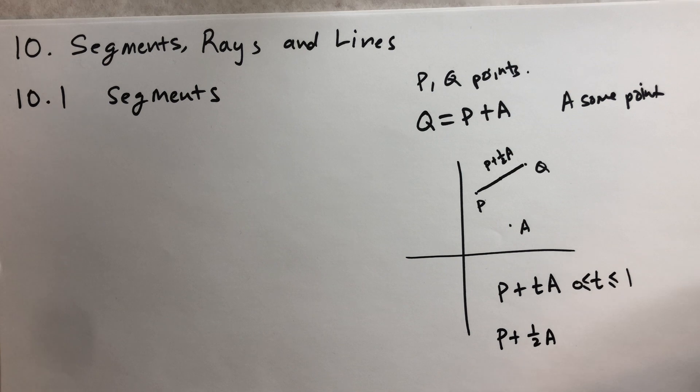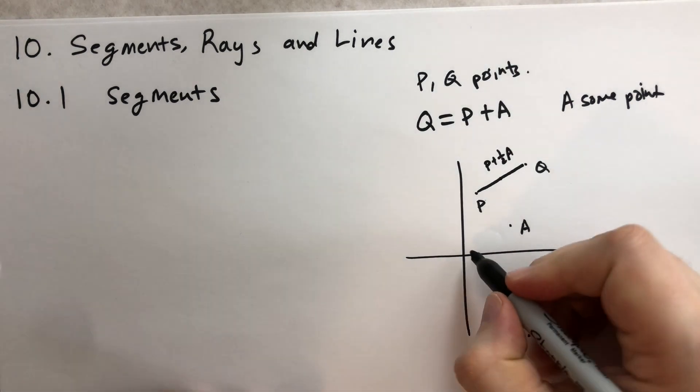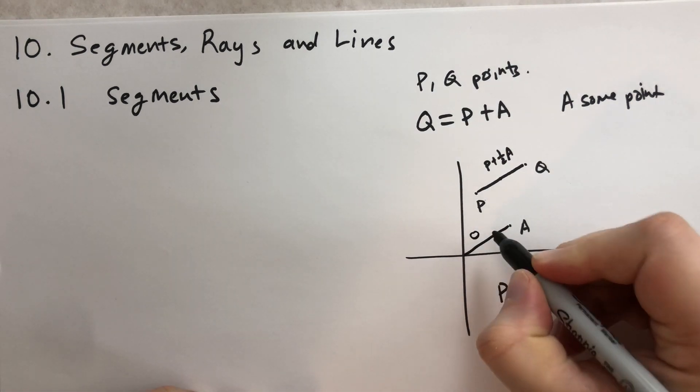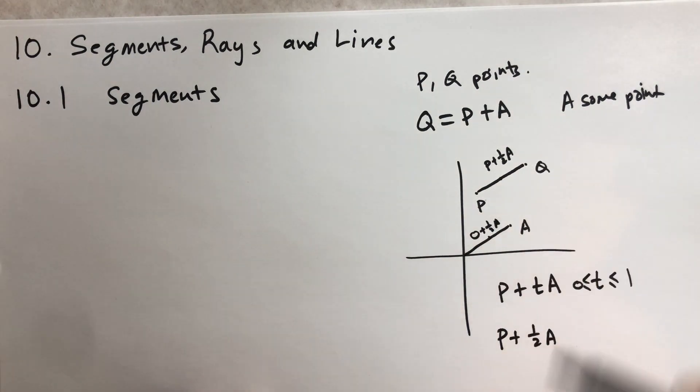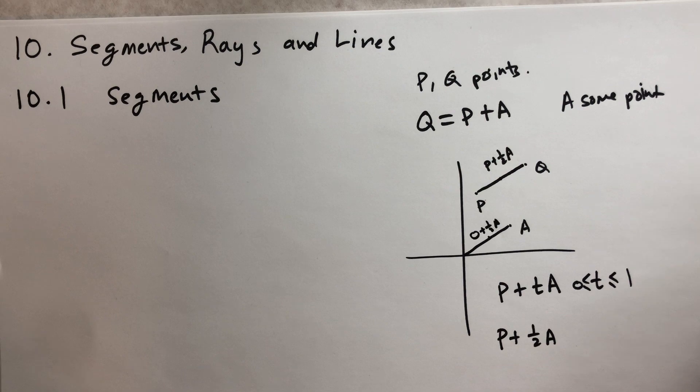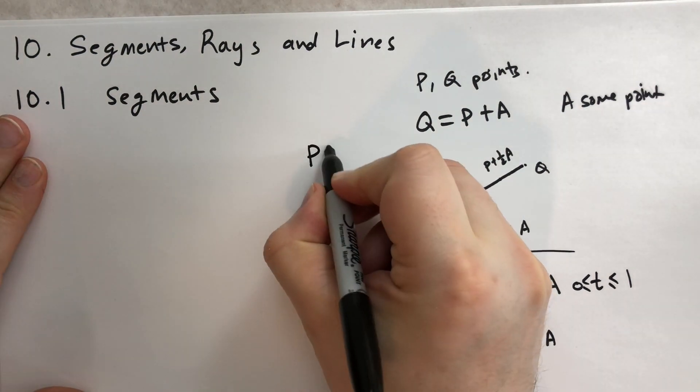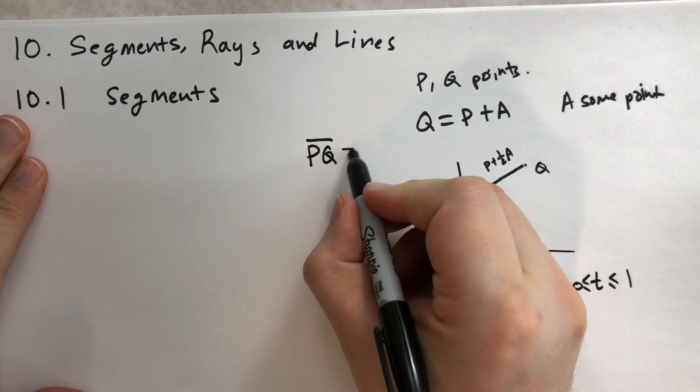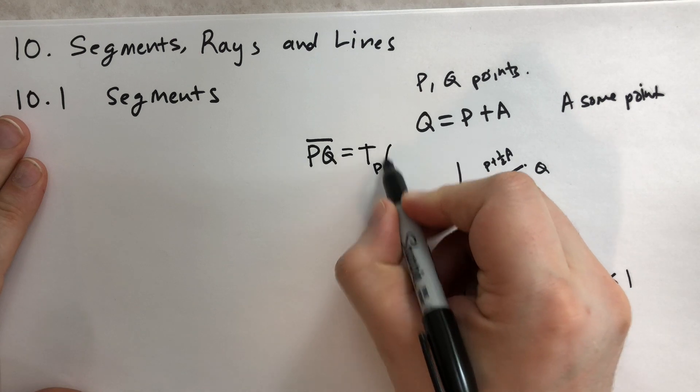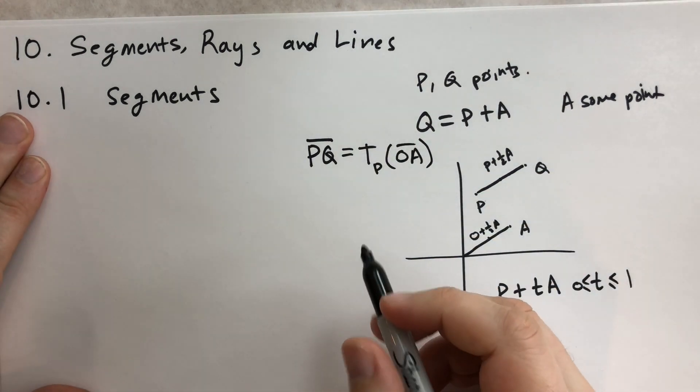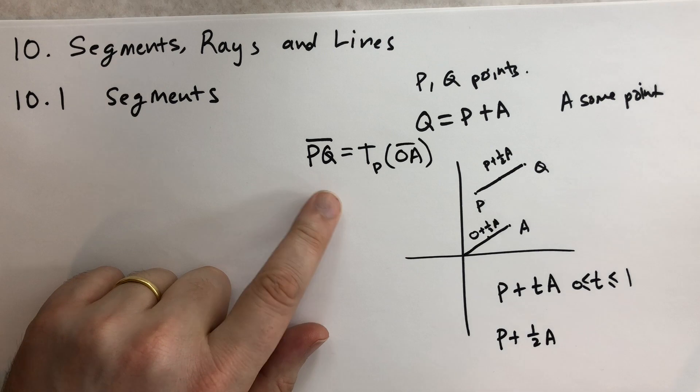There's an example for what happens between 0 and the origin and A. The line segment, you can say O plus one half A is this halfway point here. If you translate all the points by P, then you're back to the parallelogram.